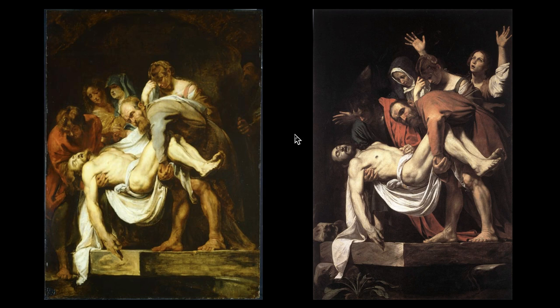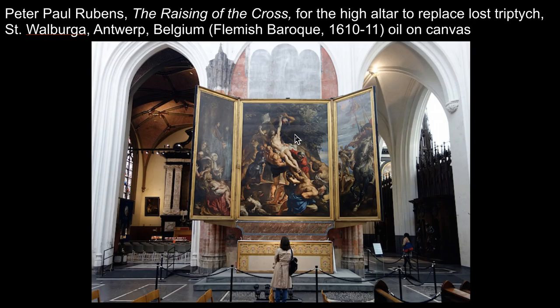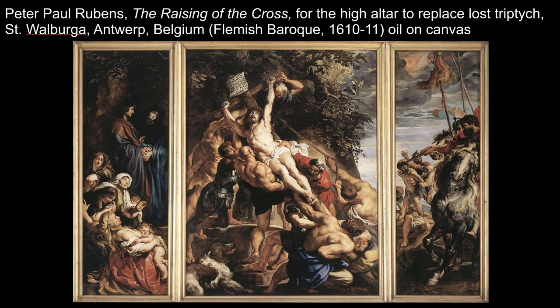Just after he returns to Antwerp in 1609 or 10, he receives a commission for this altarpiece — a commission to replace an altarpiece destroyed in the iconoclastic riots in 1566. It's for the high altar of a church and is no longer in situ. You can get a feel in this image for its size and overwhelming grandeur. It initially also had paintings below and above. The primary iconography is the elevation of the cross, as the cross moves up and away from us to then go down into the ground.